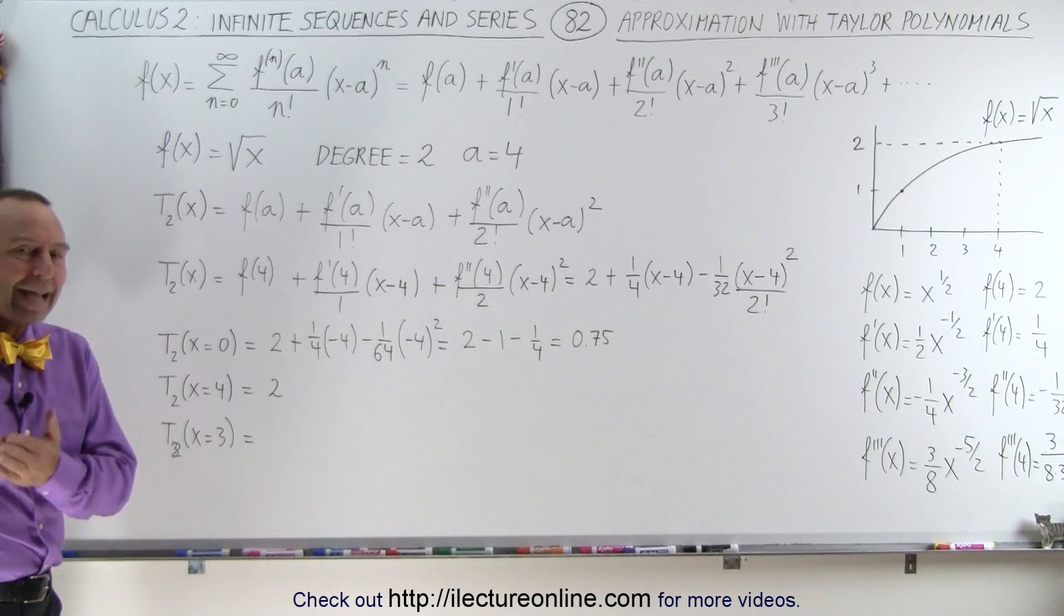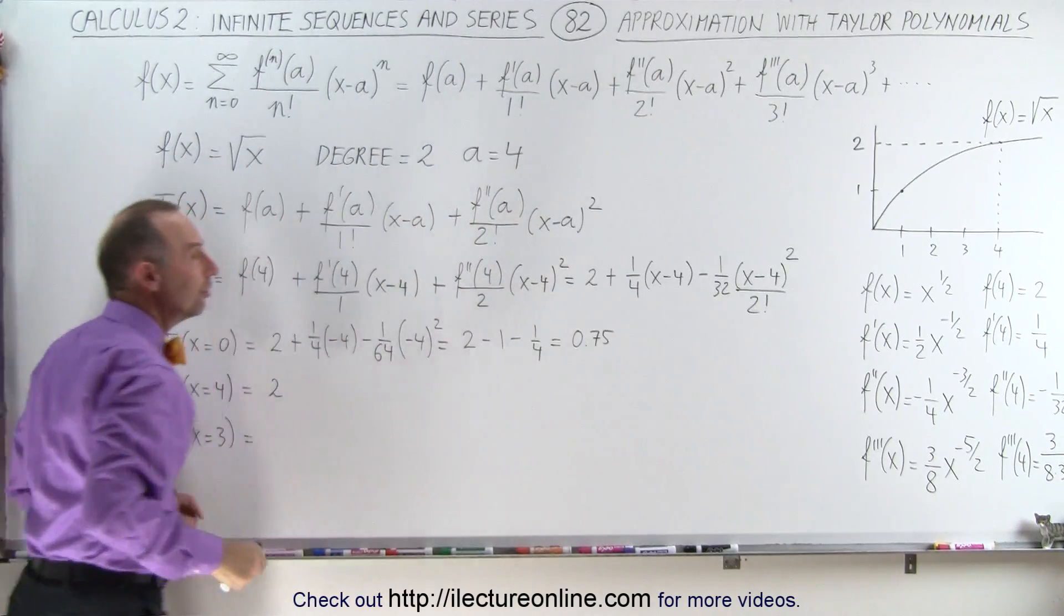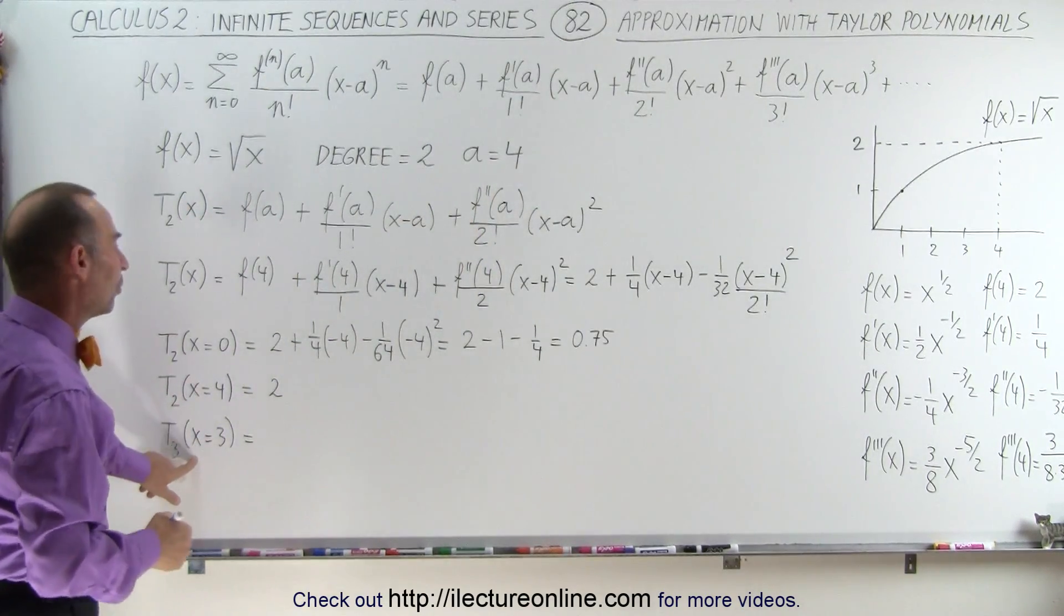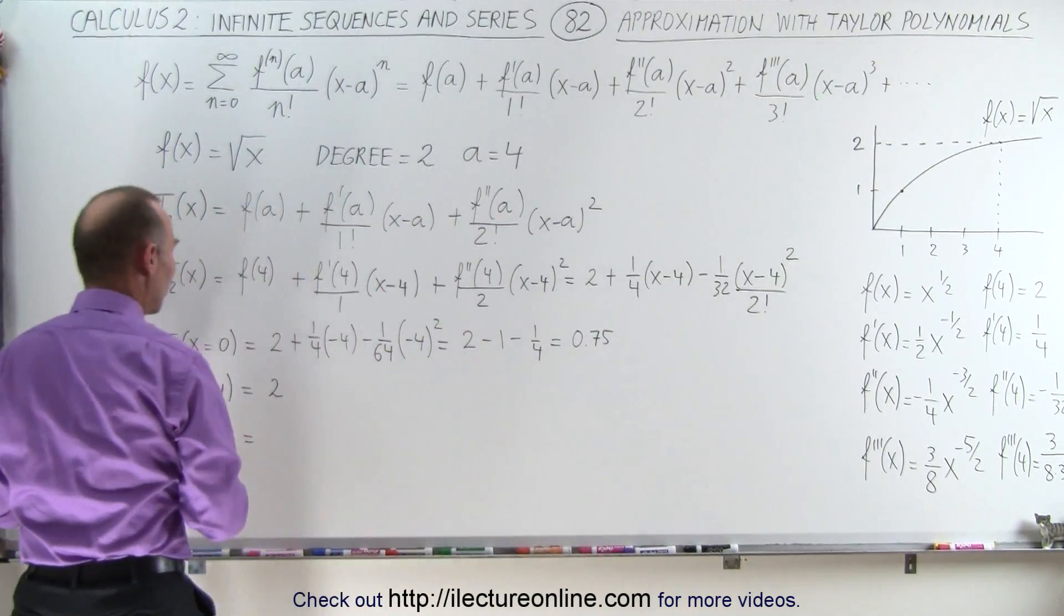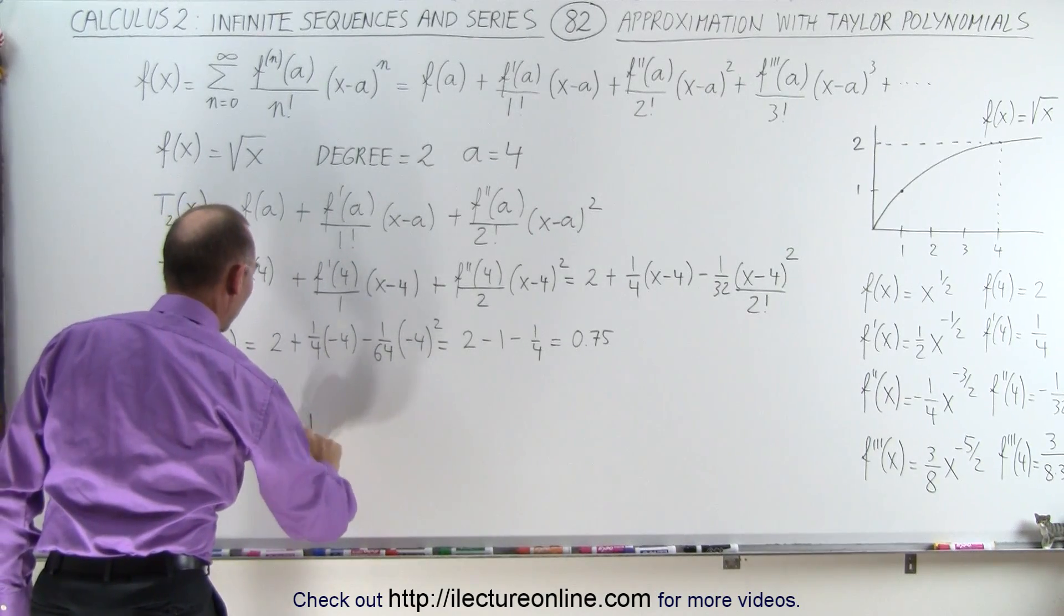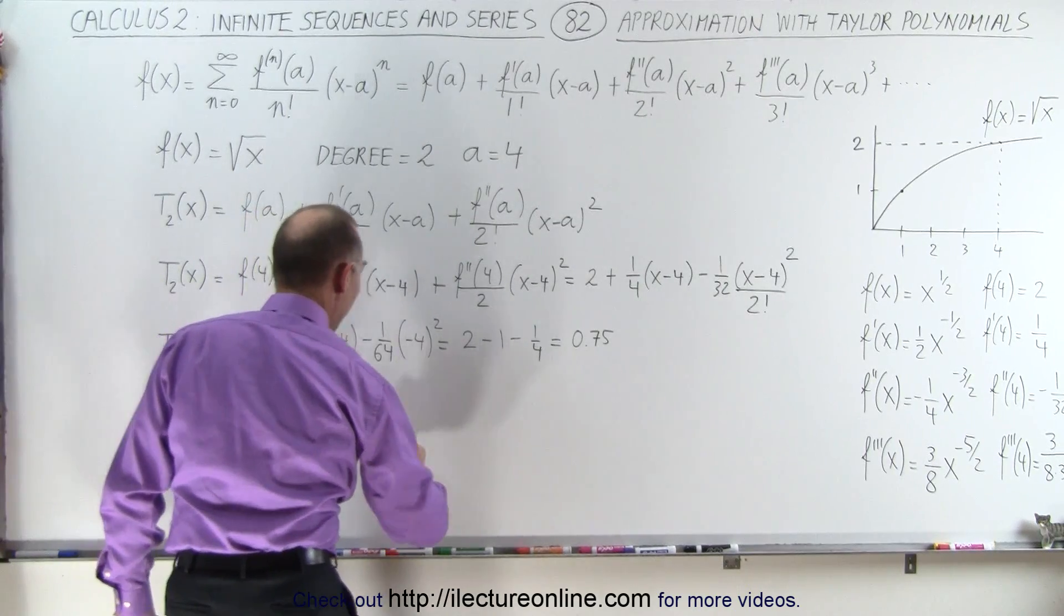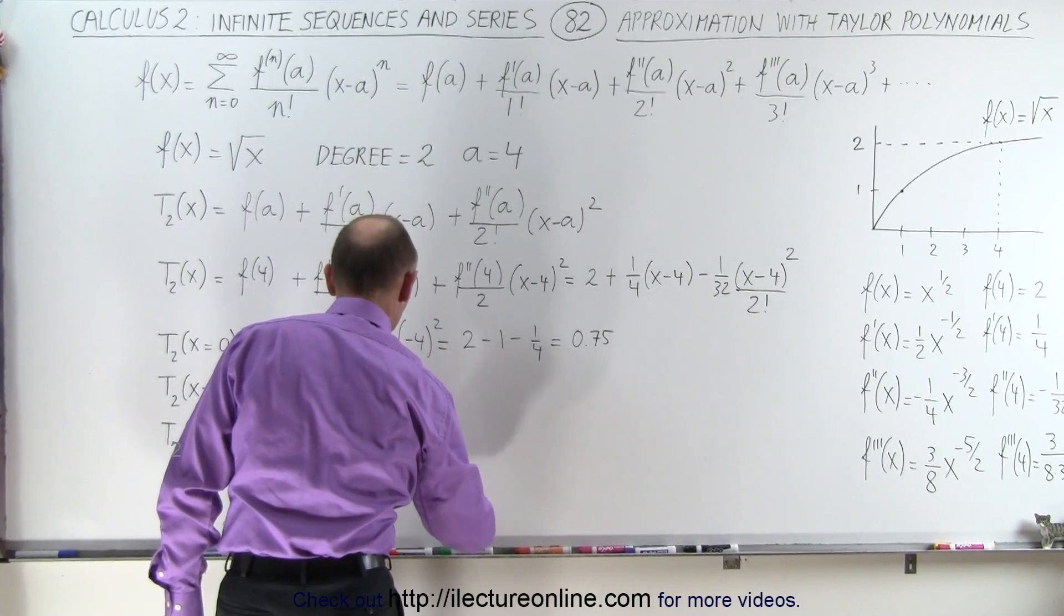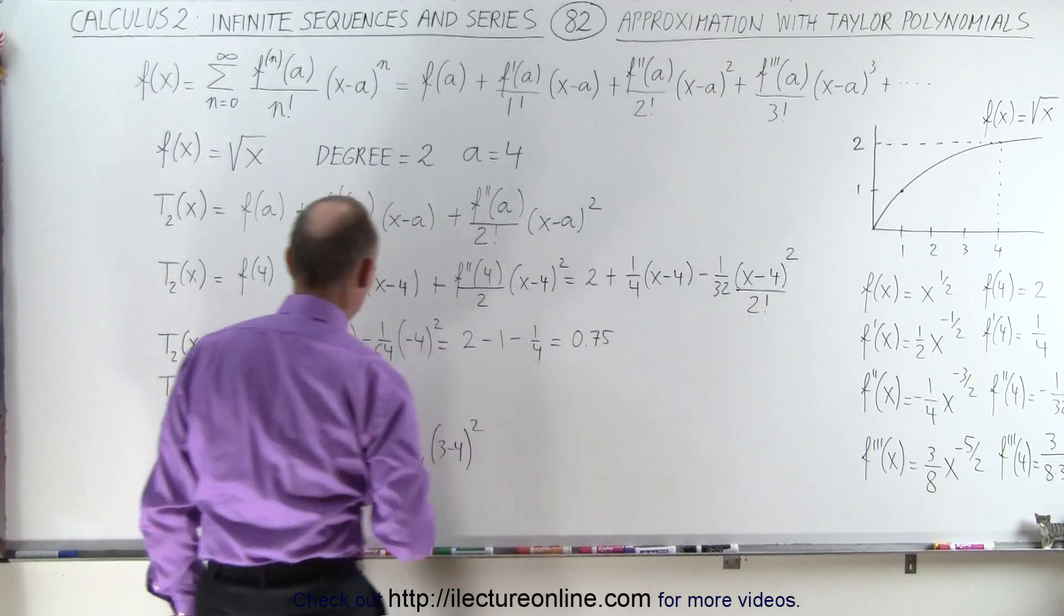Now, let's try the value x equals 3. Now, we're not very far away from a equals 4, only one unit, so we should converge rather quickly. Let's see if that is true. So, we're going to take our function right here, and instead of x, we're going to place 3 and see what we get. So, that becomes 2 plus 1 quarter times 3 minus 4 to the first power, minus 1 over 32 times 2, which is minus 1 over 64, times 3 minus 4 to the second power.